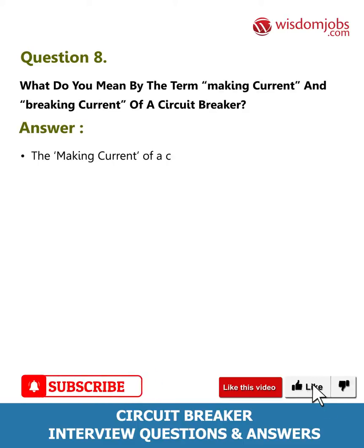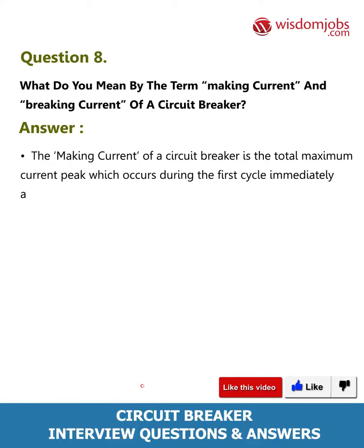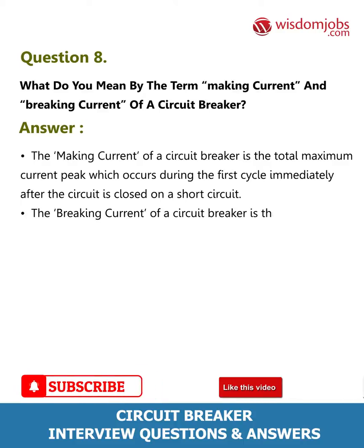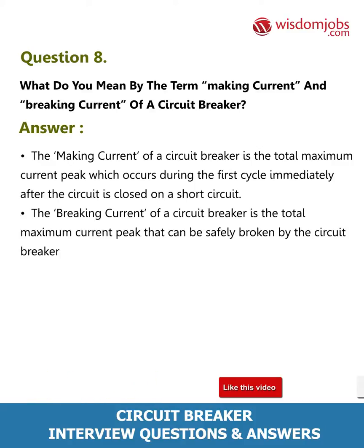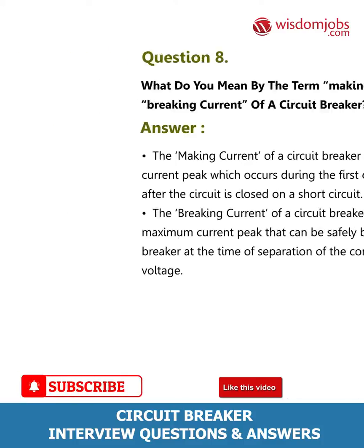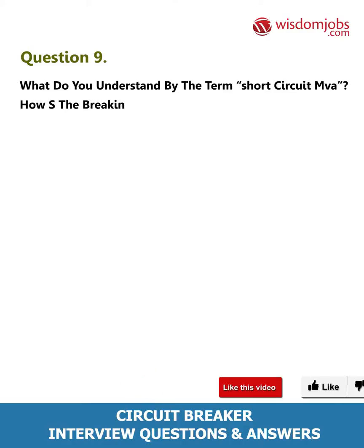Answer: The making current of a circuit breaker is the total maximum current peak which occurs during the first cycle immediately after the circuit is closed on a short circuit. The breaking current of a circuit breaker is the total maximum current peak that can be safely broken by the circuit breaker at the time of separation of the contacts at its rated voltage.